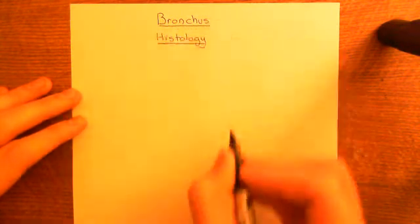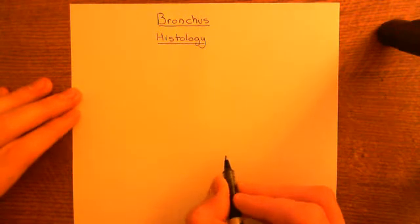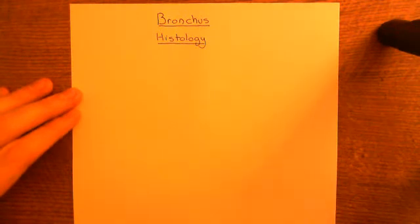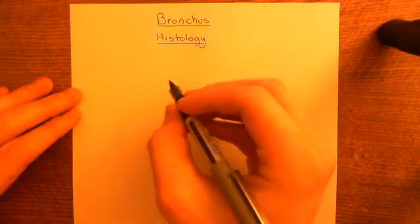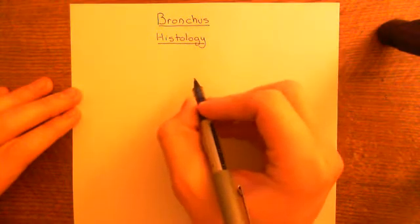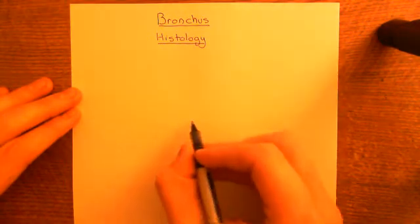We'll start off with the innermost layer of a bronchus, which is what's known as the mucosa, which is the epithelium that secretes mucus. Let's have a look at this.